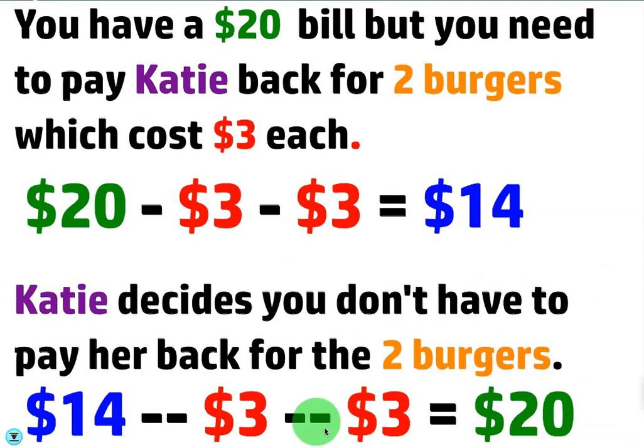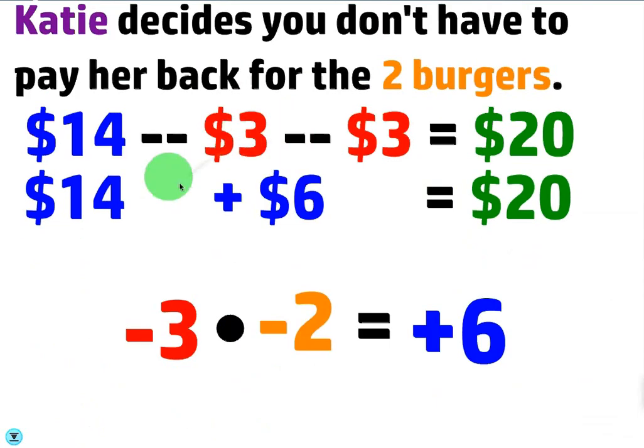In other words, you're taking the debt away and you're taking that away twice since you owe $3 twice. So what ends up happening is when you're subtracting a negative you end up adding it, and you're taking $14 and adding $6 back and you get to keep the $20 in your pocket.